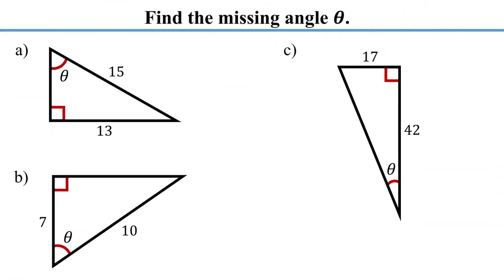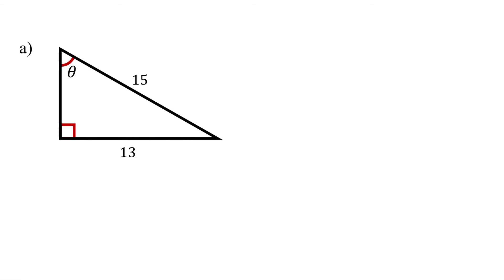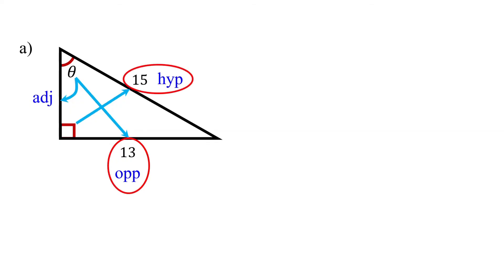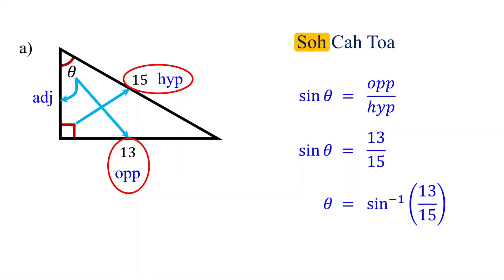How do we find a missing angle when given the lengths of two sides? Label the sides with respect to the angle we are asked to find. Opposite the right angle is the hypotenuse; opposite angle theta is the opposite side; the remaining side is the adjacent side. The opposite side and the hypotenuse are given. According to SOHCAHTOA, it is the sine function that relates these sides. So sine of theta equals 13 over 15. To find theta, we use the inverse sine function: theta equals the inverse sine of 13/15.